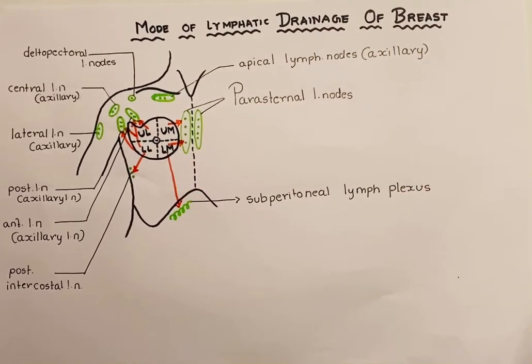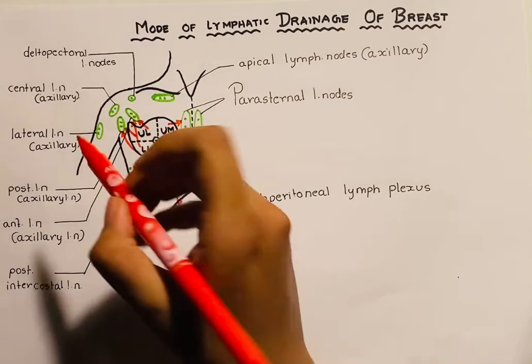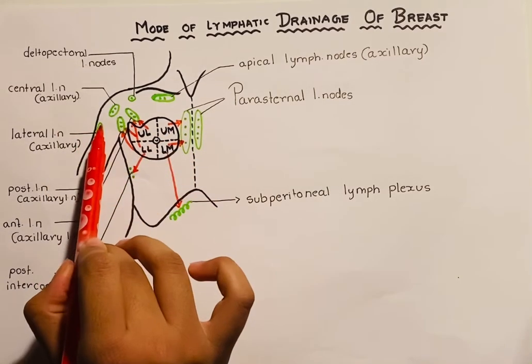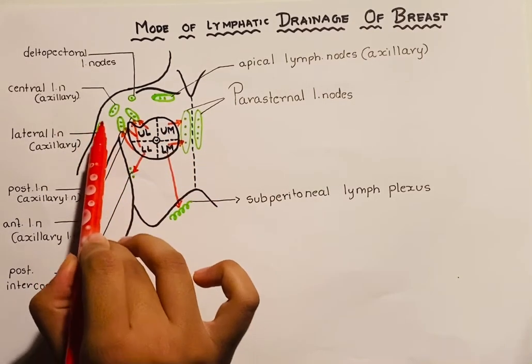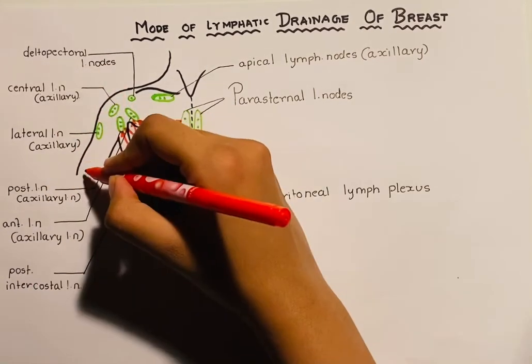Now the lymph from the arm, forearm, and hand — or more broadly — is drained into the lateral group of axillary lymph nodes.